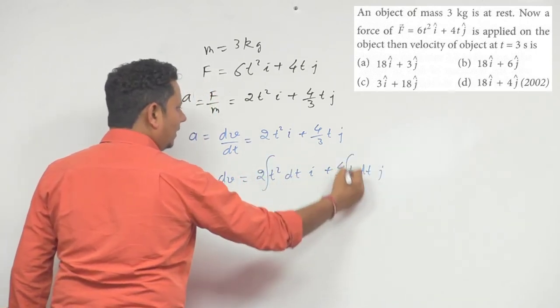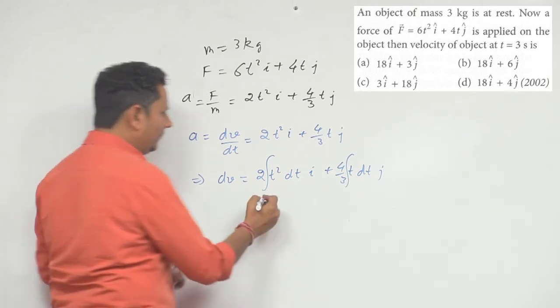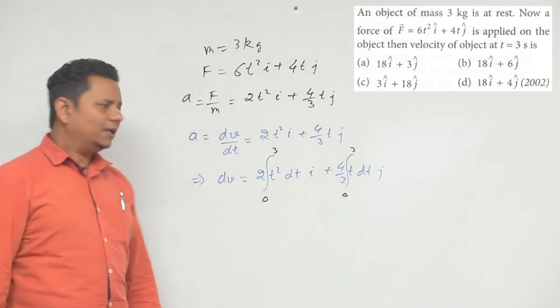If we integrate both sides, we keep the limit of 0 to 3 seconds because that's what is being asked. We are asked to find velocity from 0 to 3 seconds.